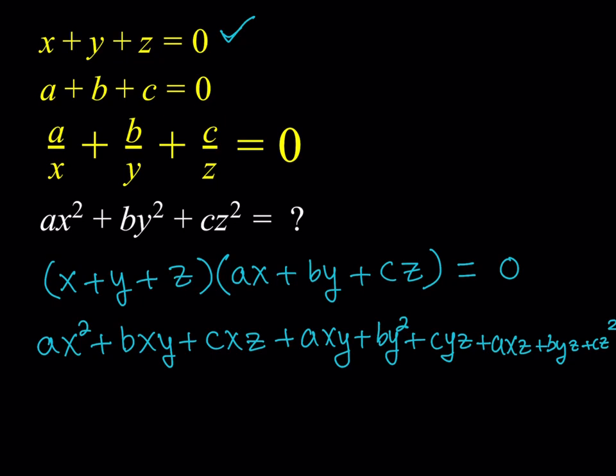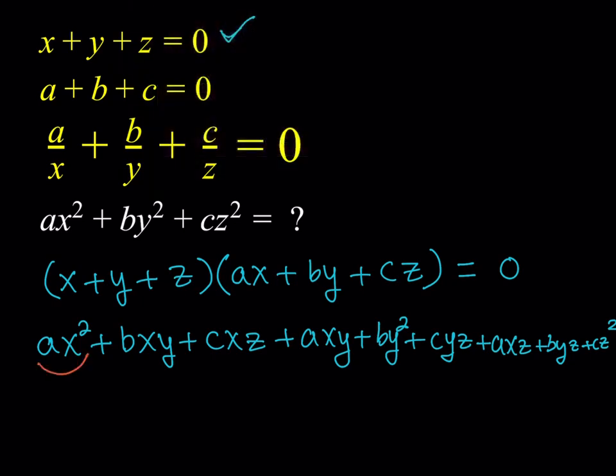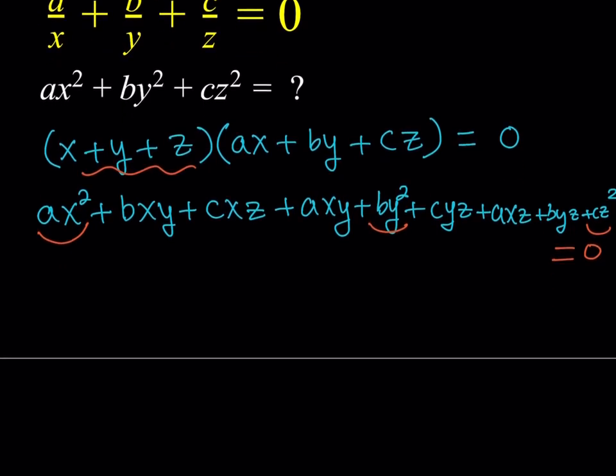So notice that here we have something cool, ax squared plus by squared plus cz squared. And obviously, this is equal to zero, because x plus y plus z is equal to zero. Zero times any quantity is always equal to zero.